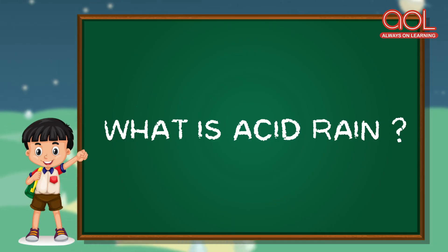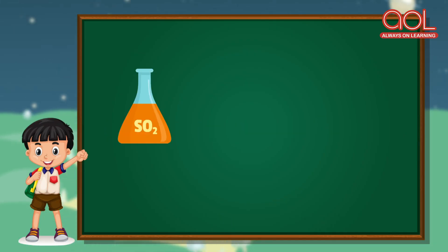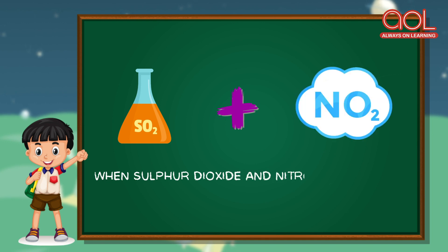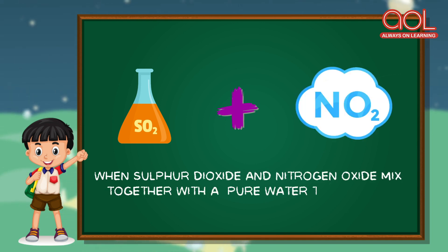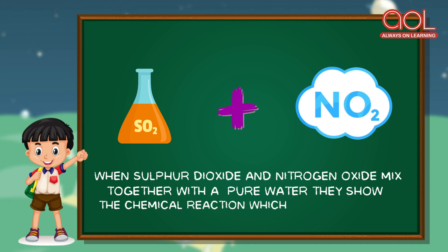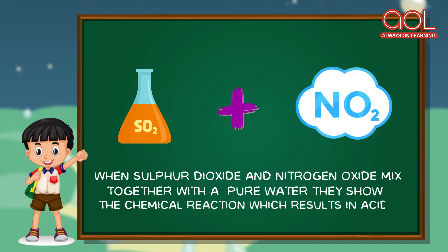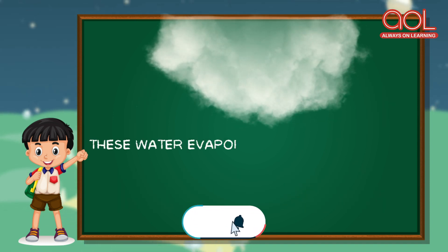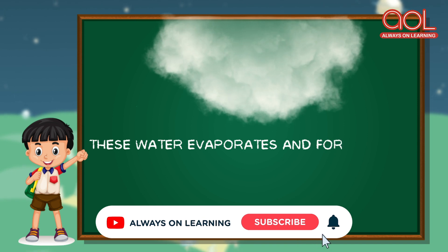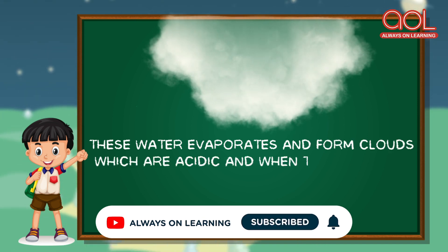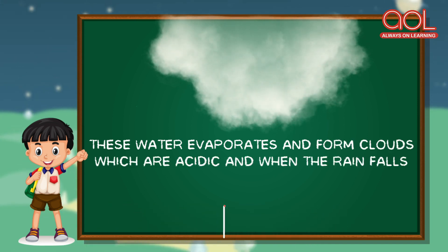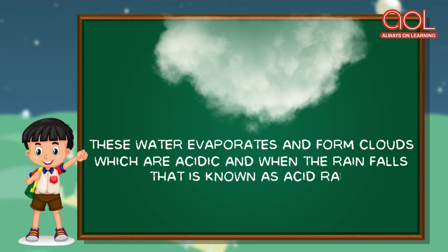Now, what is this acid rain? Whenever there is sulphur dioxide and nitrogen oxide mixed together with pure water, they show a chemical reaction which results in an acidic form. These water evaporates and forms clouds which are acidic, and when that rain falls, it is known as acid rain.